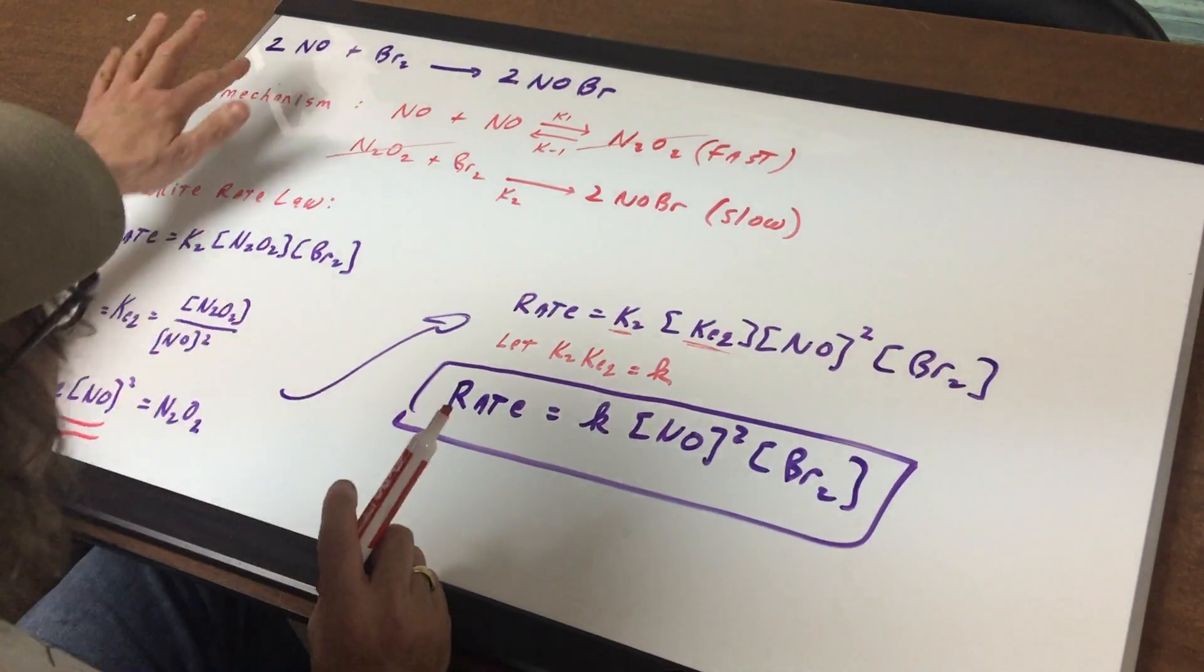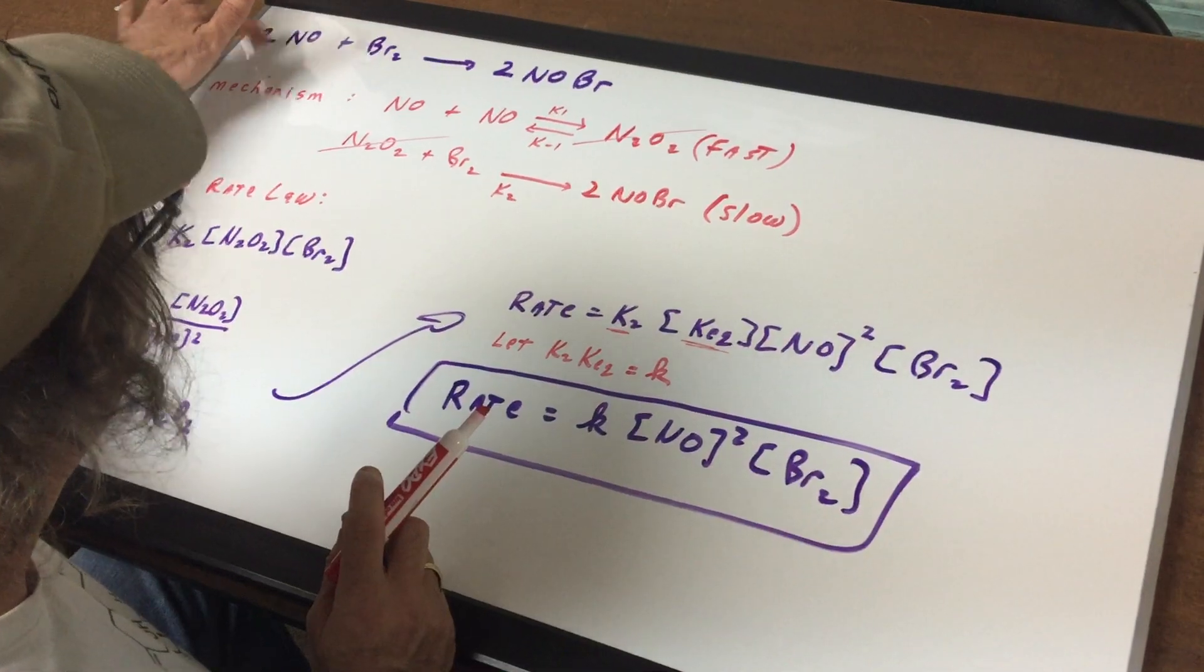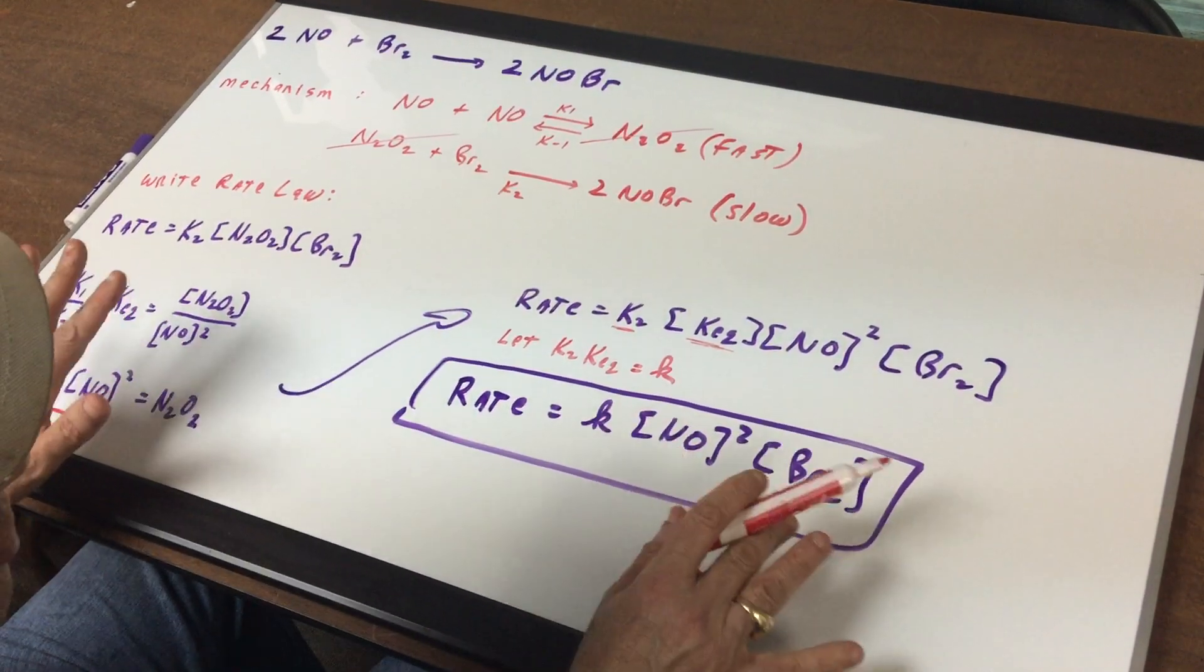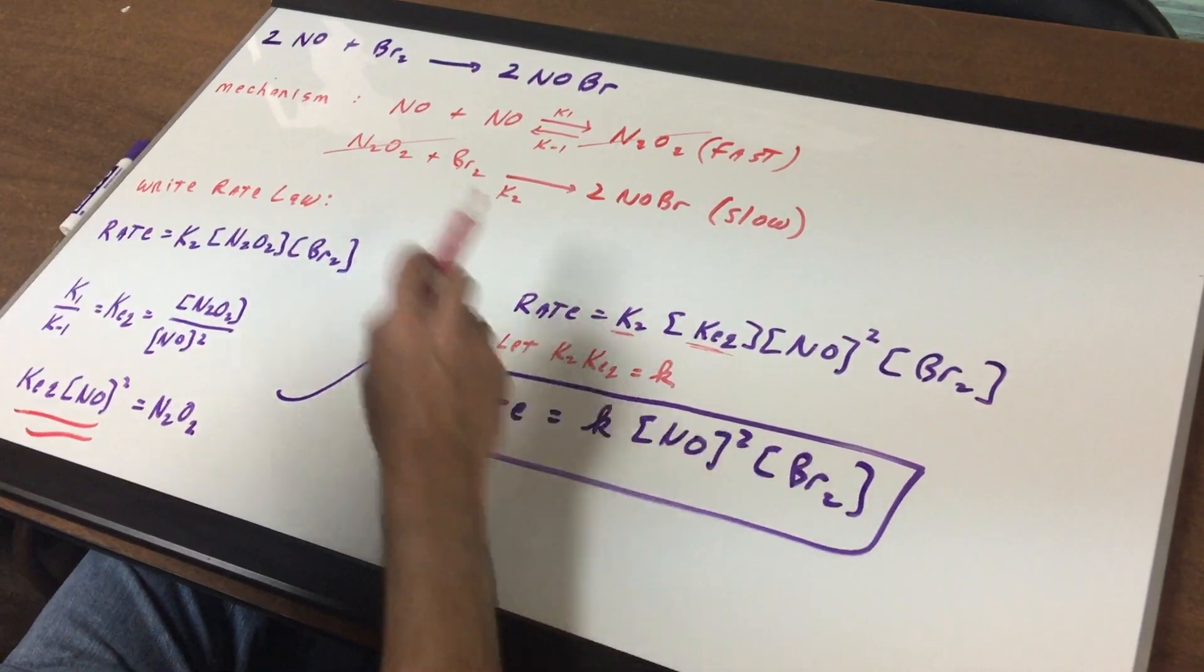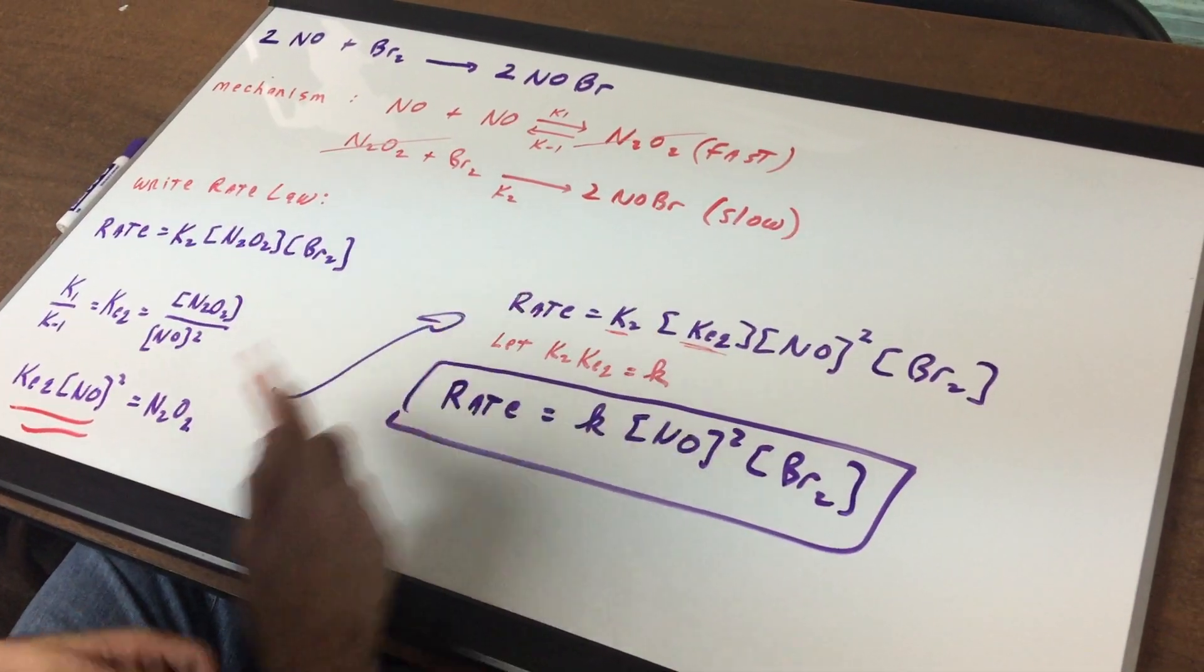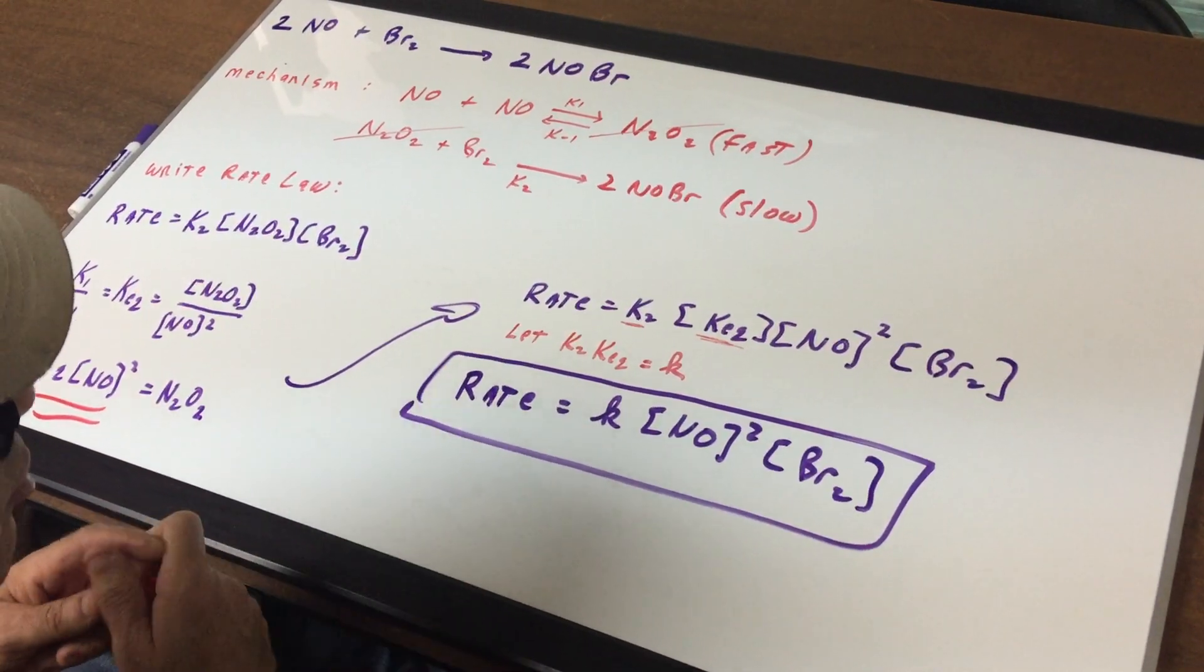One quick warning. Even though you might have saw there was NO here and a 2 and a bromine, that has nothing to do. That was just pure coincidence that the coefficients matched up exactly to the rate law. You needed to go through this and find the correct rate law.